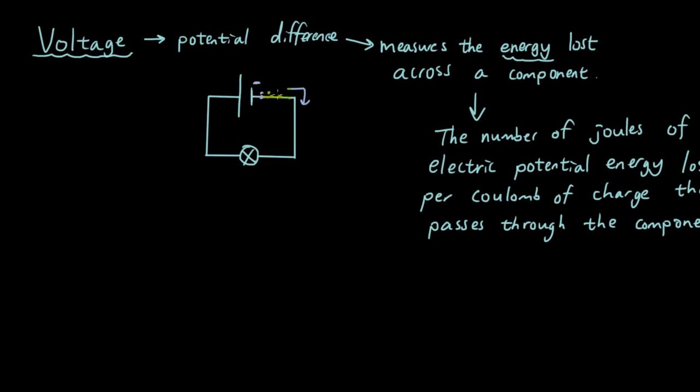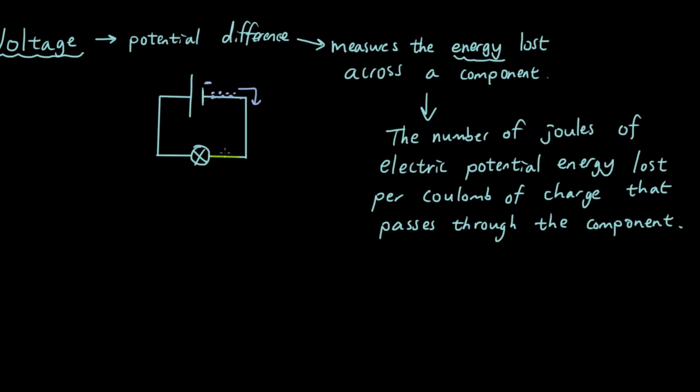Electrons are coming out of this negative terminal moving in this direction. And when it moves through the light bulb, when it moves through the light bulb, some of the energy that was used to move the electrons is lost as the energy is used to power the light bulb. So it's probably lost as heat energy.